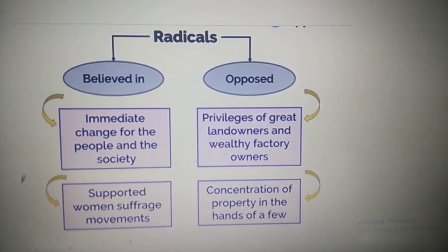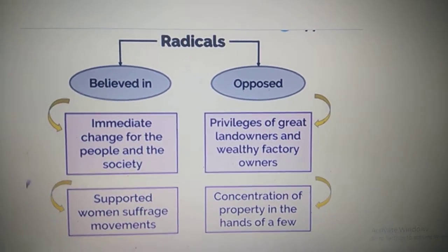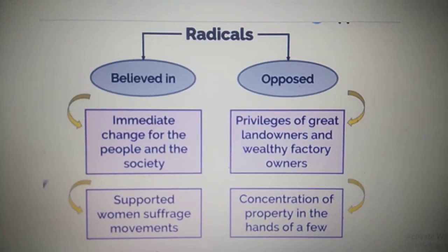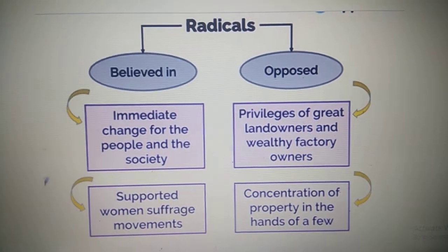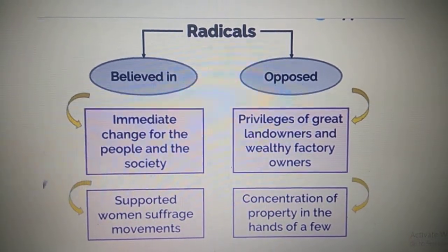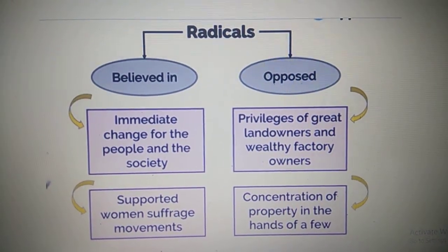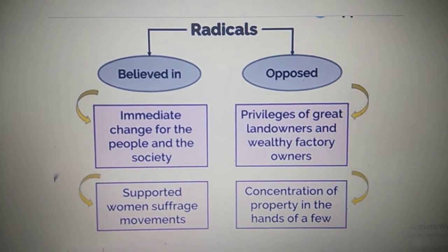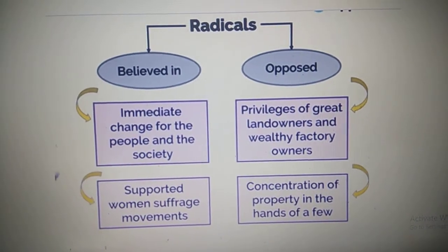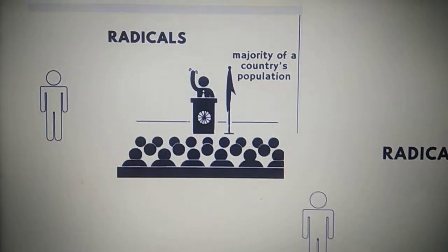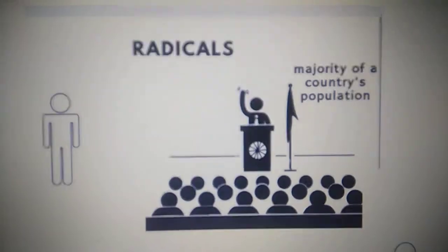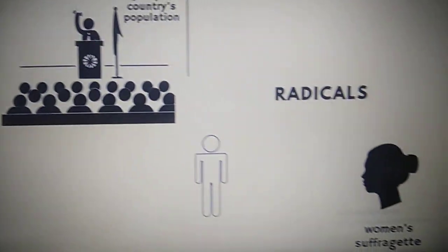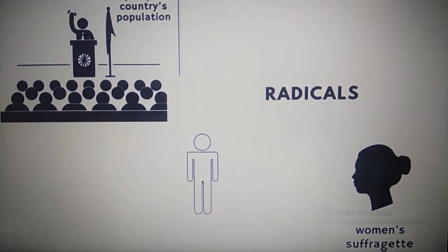Now let us look into the views of the Radicals. They wanted immediate change in the society — change should happen very quickly. They supported universal adult franchise for women, saying that women should also be given the right to vote. They did not like that all the benefits went to the wealthy people, to the rich landowners and factory owners. Property should not be in the hands of only a few landowners and nobility — it should be equally divided. They wanted a government elected by the majority of the population.